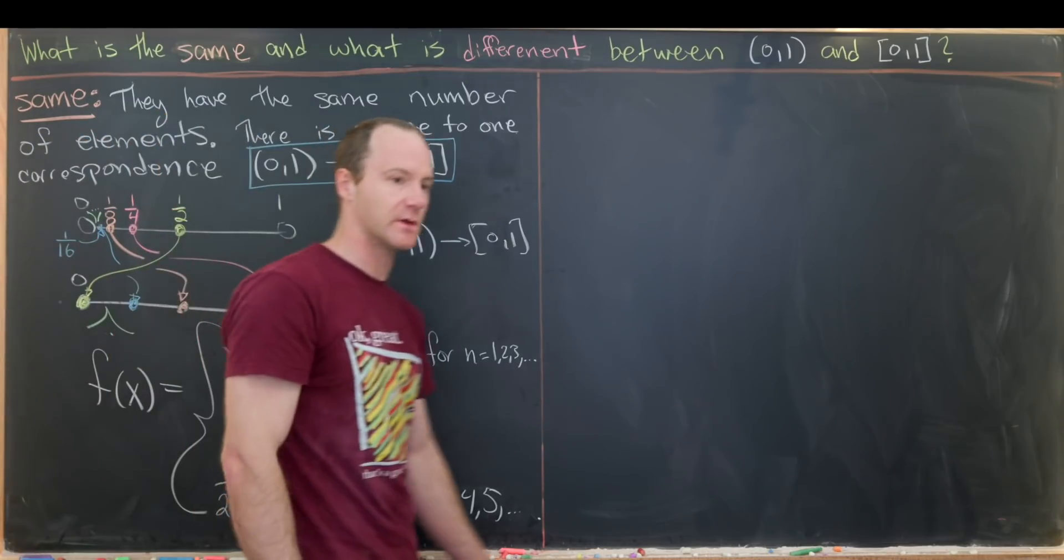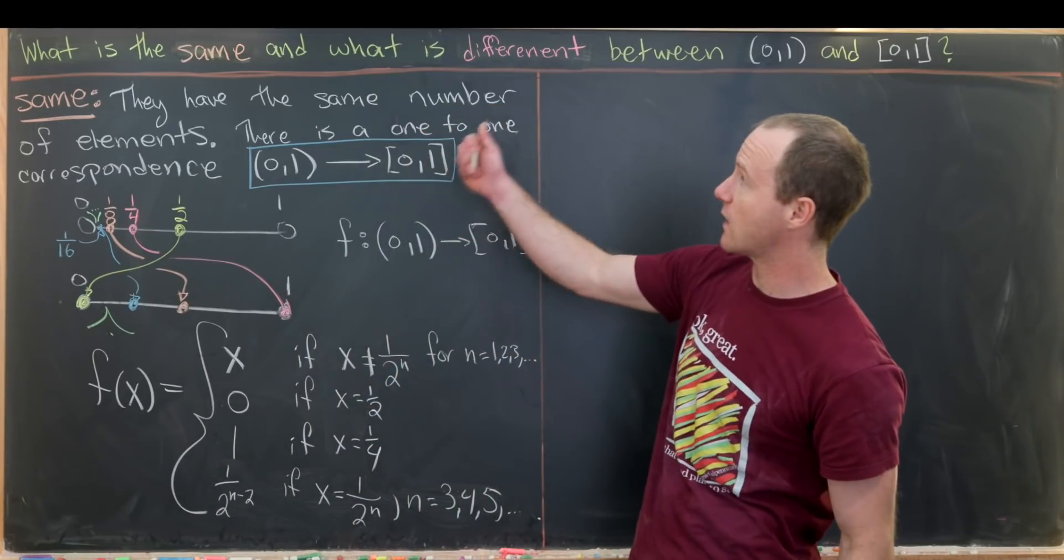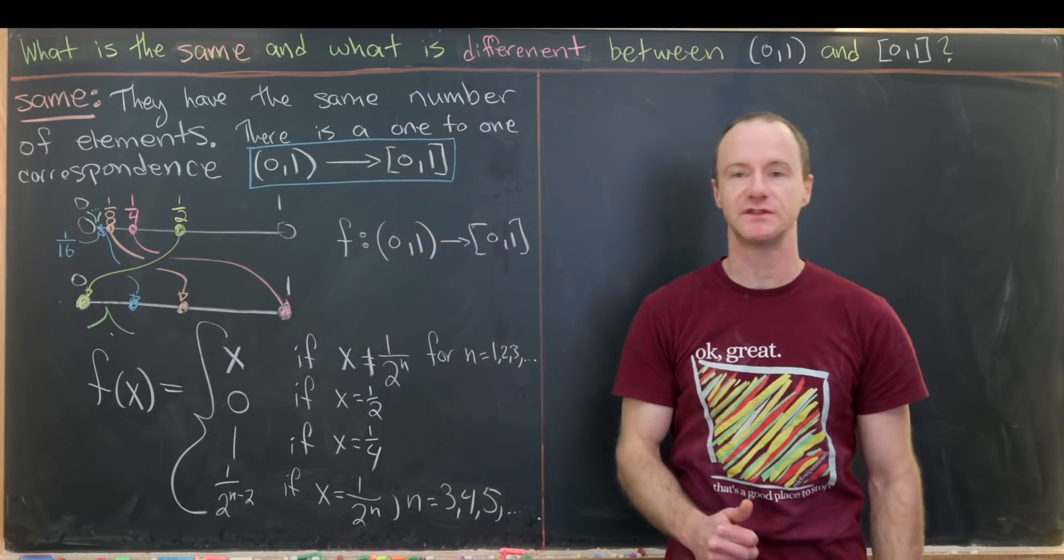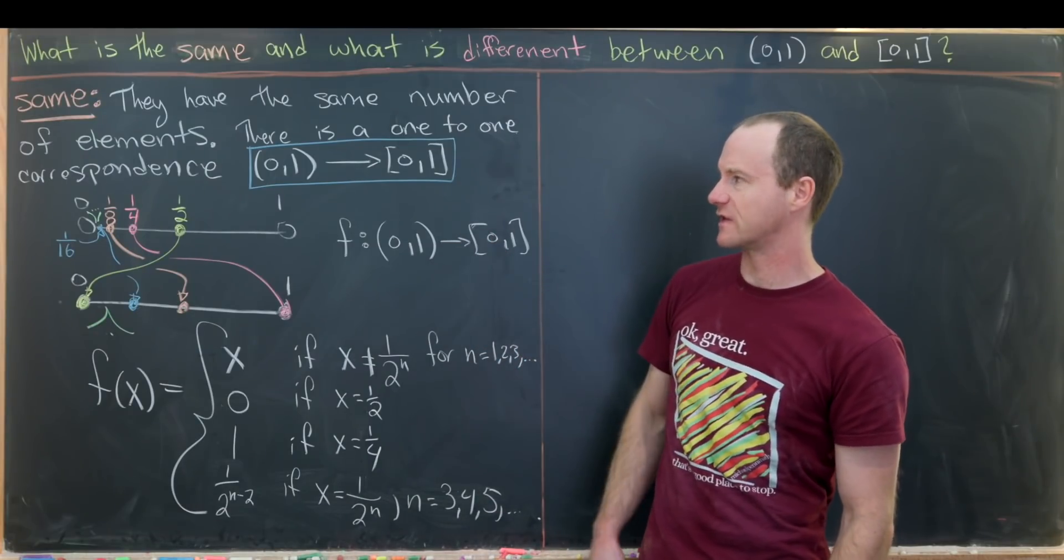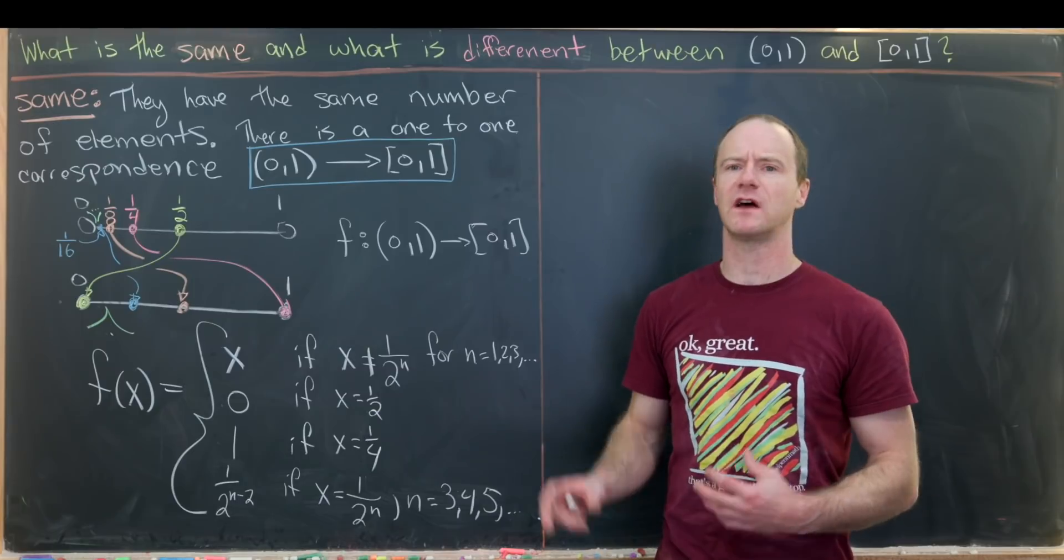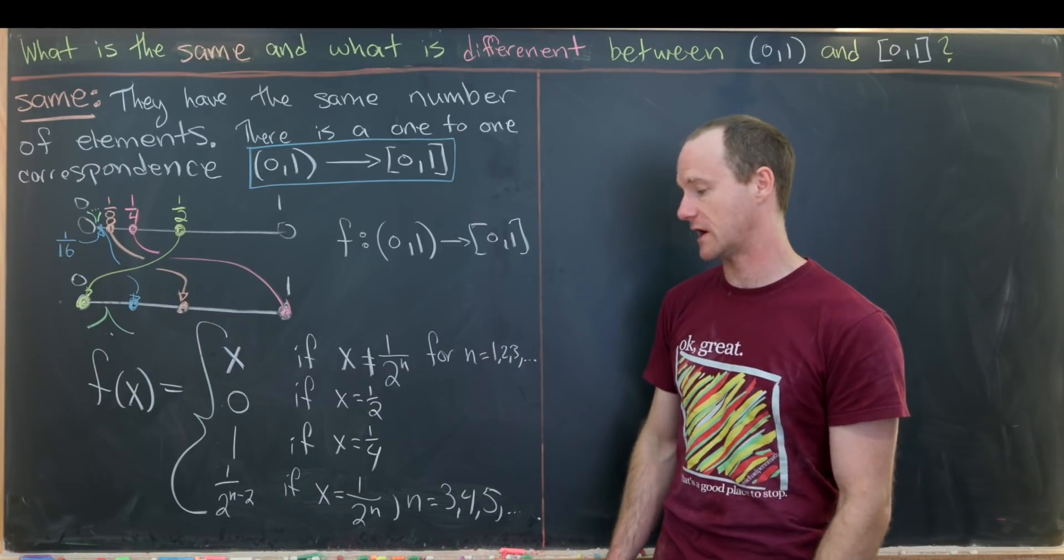So just to reiterate what's going on here, our goal is to show how this open interval and this closed interval are similar yet different. And this is maybe how they're the same. They have the same number of elements. In other words, they have the same cardinality.